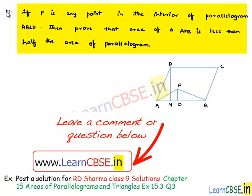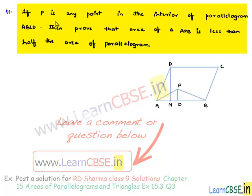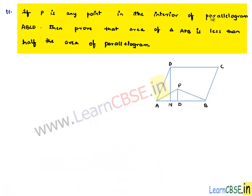Now, let us discuss question number 11 from exercise 15.3, chapter 15. If P is any point in the interior of parallelogram ABCD, then prove that area of triangle APB is less than half the area of parallelogram.